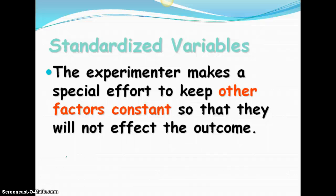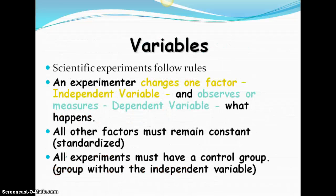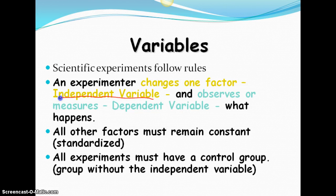Standardized variables are all the things that we need to keep the same. So we have to make sure that all the other factors that are happening in the environment for these salamanders are kept the same. We don't want anything else to affect the outcome so that we are just testing that one independent variable. Variables, when we look at independent and dependent variable, the independent variable right here is the one that you change. The dependent variable are your measurements. All other factors have to remain constant and the experiment must have a control group.